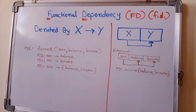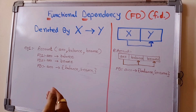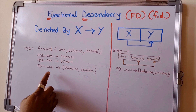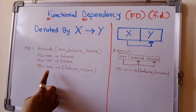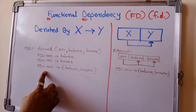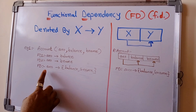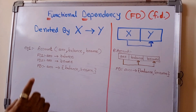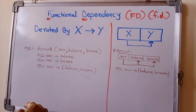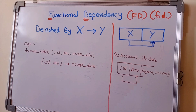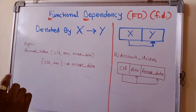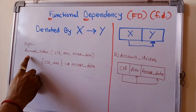Now let's go deeper into functional dependency. Can we have more than one attribute on the determinant side? Yes, we can. Let's take one more example to understand this.